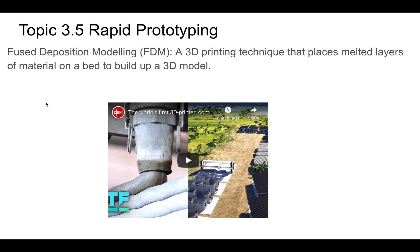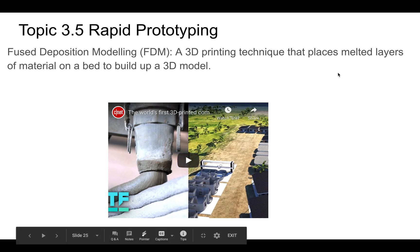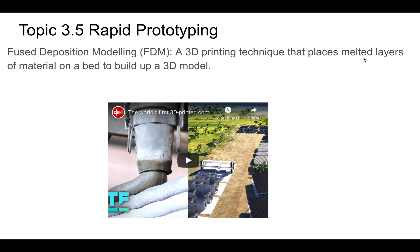This is called fused deposition modeling, and essentially this is 3D printing. There are 3D printing houses using a giant 3D printer and concrete - this would be fused deposition modeling because the concrete is fusing together, but it's not being melted. It's in a liquid state when it's fusing, so maybe that definition needs to be updated. But for us, when we 3D print, we're melting plastic and then placing layers on a bed - that's essentially what our 3D printers are doing.